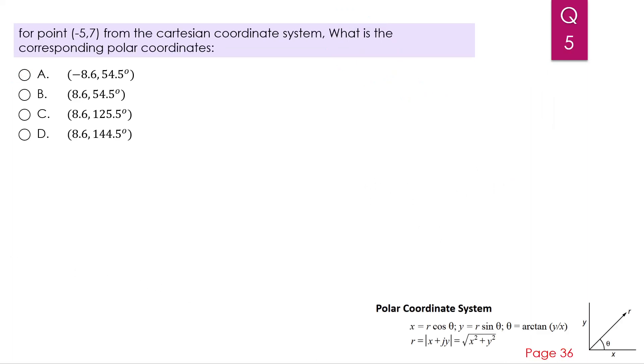Next one, for point (negative 5, 7), so this is x and y, from the Cartesian coordinate system, what is the corresponding polar coordinates? Now, again, if you go to page 36, you will find the polar coordinate system, how you will do it.